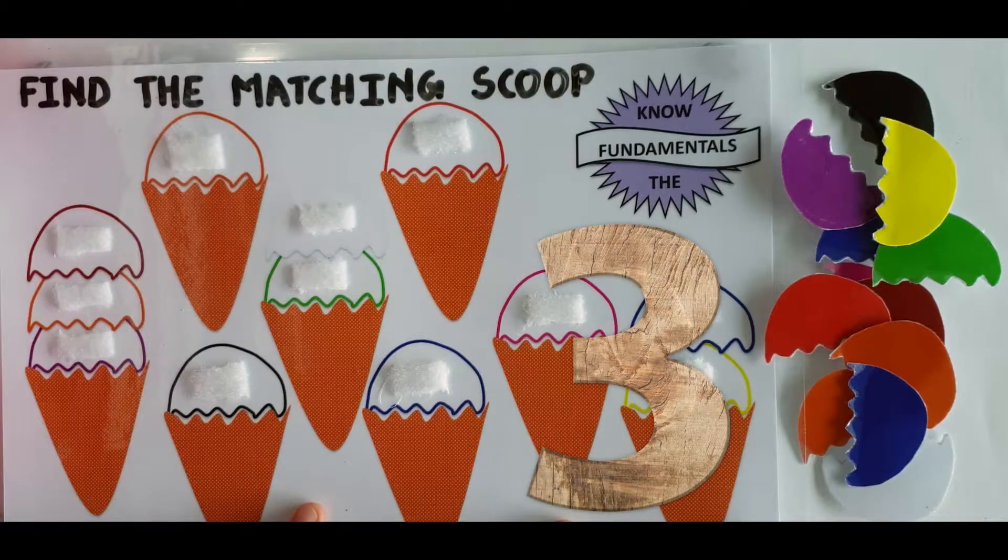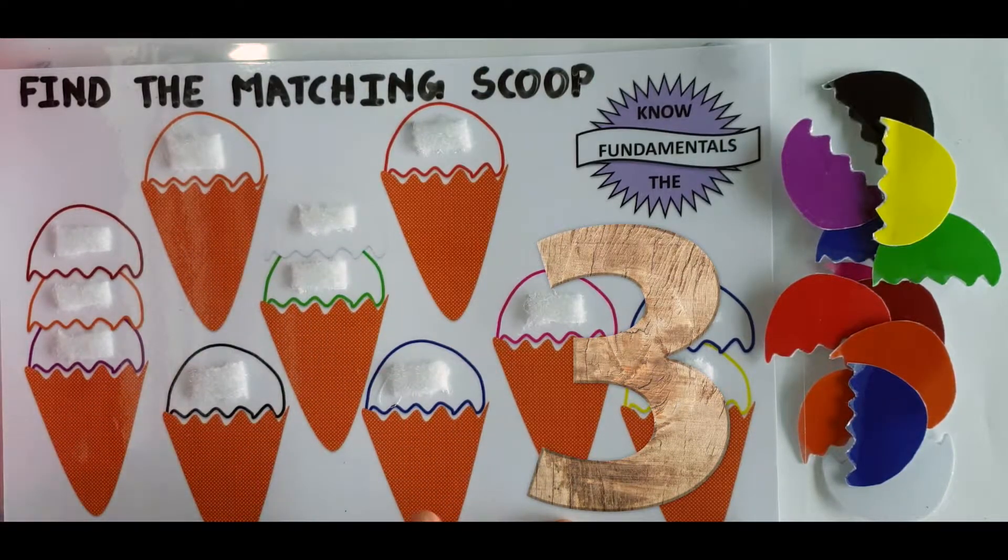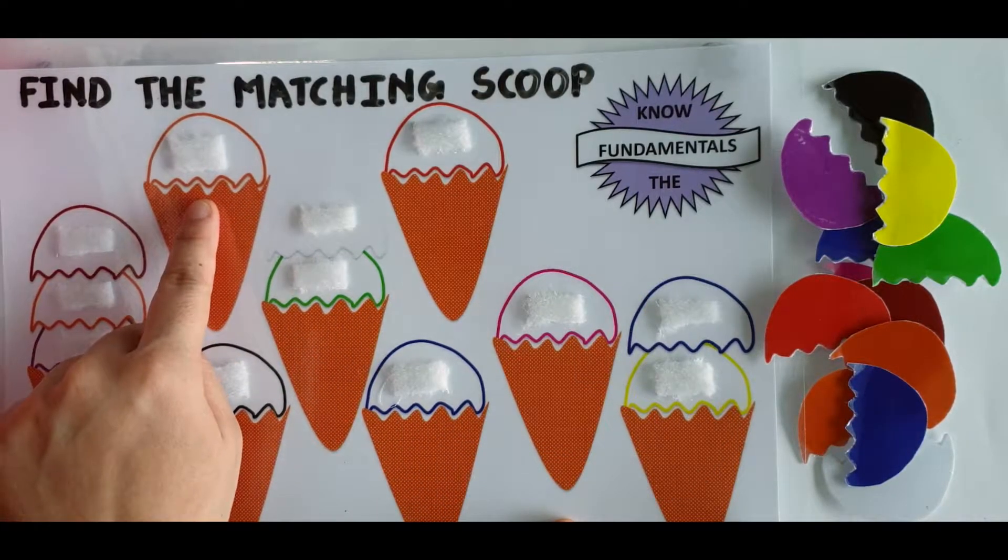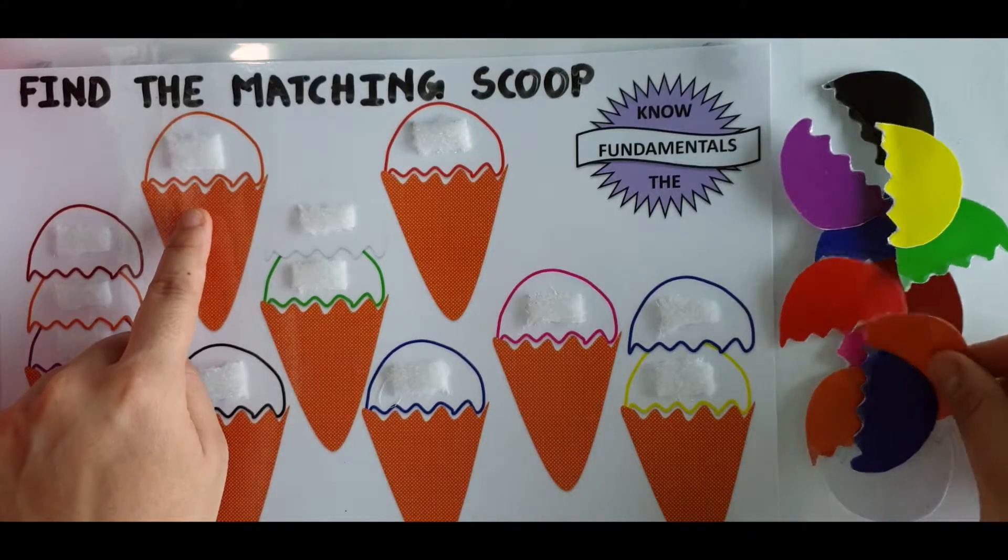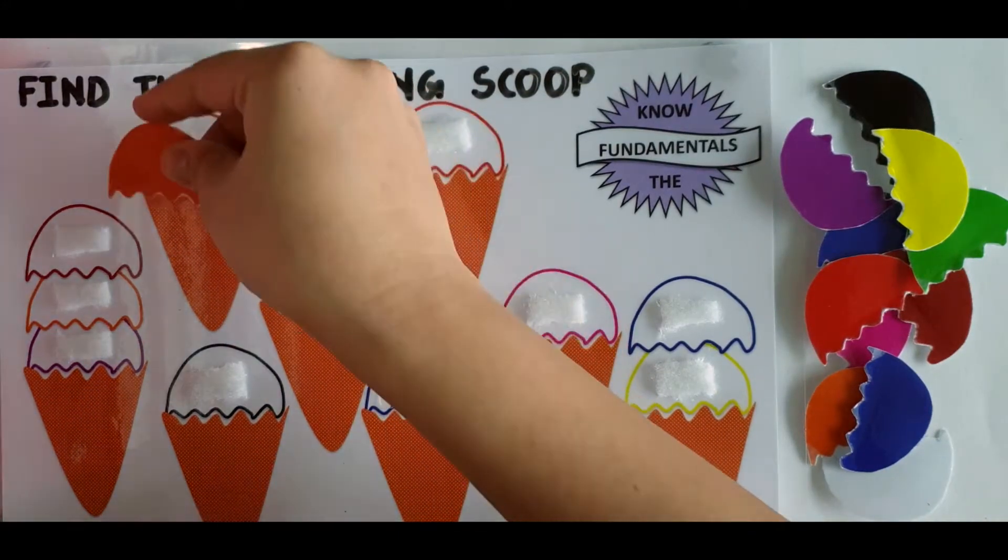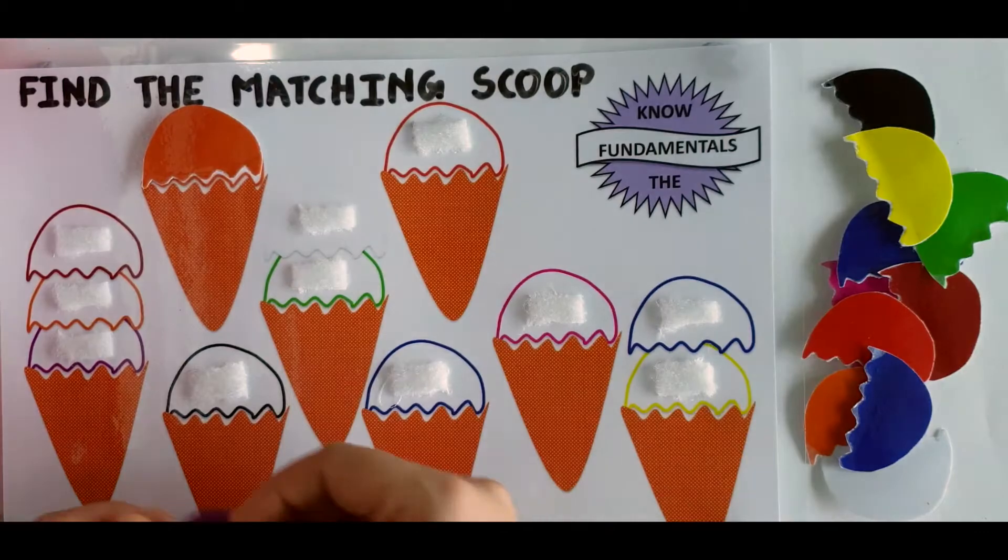So this is activity number three. Find the matching scoop. So based on the border of the scoop, the kids will arrange the colors. So this is orange, it goes here, purple.